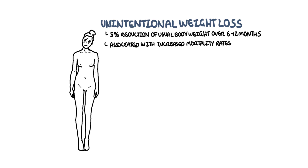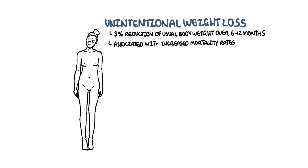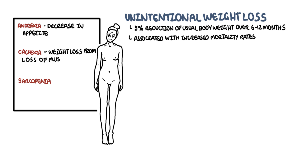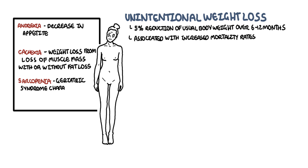There are a few definitions we need to go over. Anorexia is the decrease in appetite. Cachexia is weight loss from loss of muscle mass with or without fat loss. Sarcopenia is a geriatric syndrome characterized by loss of muscle mass, strength, and performance.